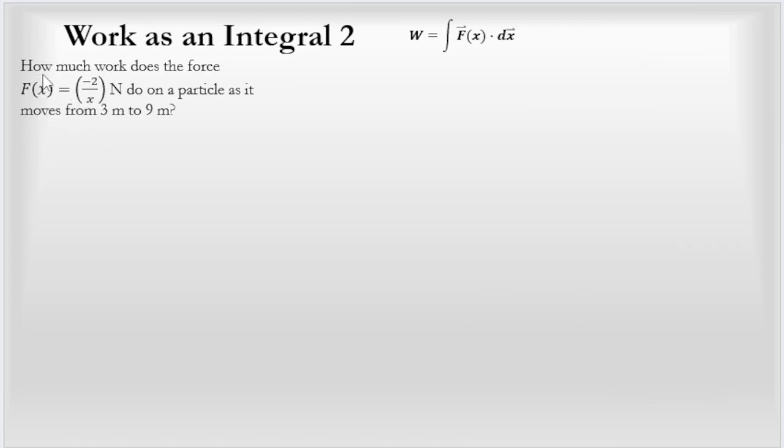The last example I have here is another integral, work as an integral 2. Notice that the force here is a much more interesting function. How much work does the force -2/x newtons do on a particle as it moves from 3 to 9 meters? Another thing I'm going to assume is that the force is in the negative direction: -2/x is the force. The displacement goes from 3 to 9, so you can see the displacement vector is 6. This is Δx, but when we integrate, we have to put as limits on our integral from 3 to 9.